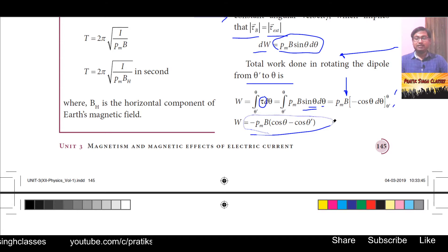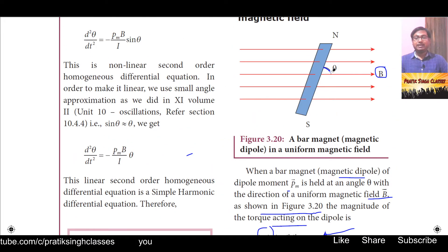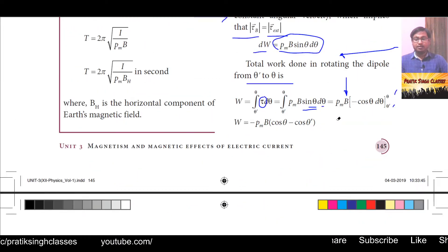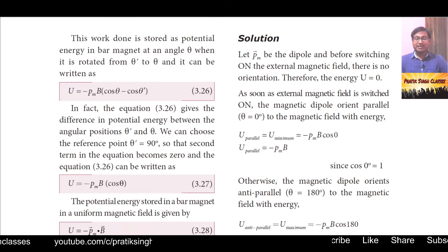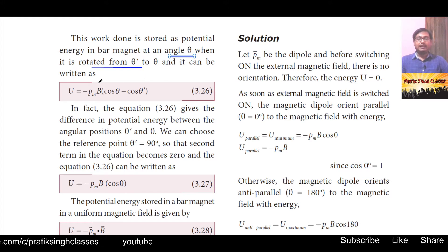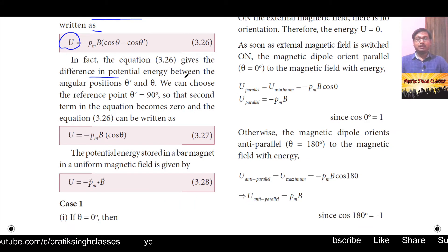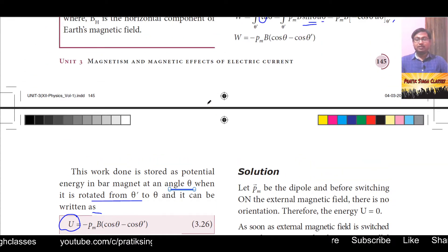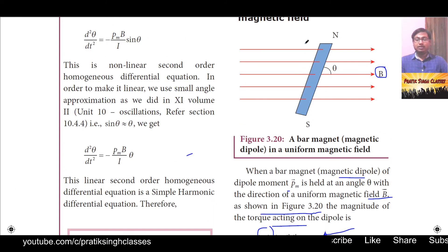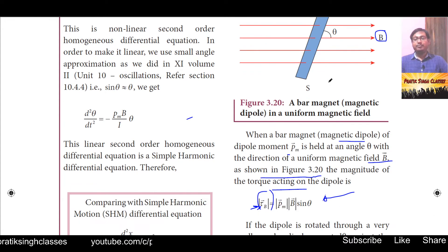This work done is stored as the potential energy of the bar magnet when rotated from θ' to θ. It is written as: U = −p_m · B · (cos θ − cos θ'). Equation 3.26 gives the difference in potential energy between angular positions θ' and θ — that is, the work done to rotate the bar magnet from the initial angle to the final angle equals the difference in potential energy.